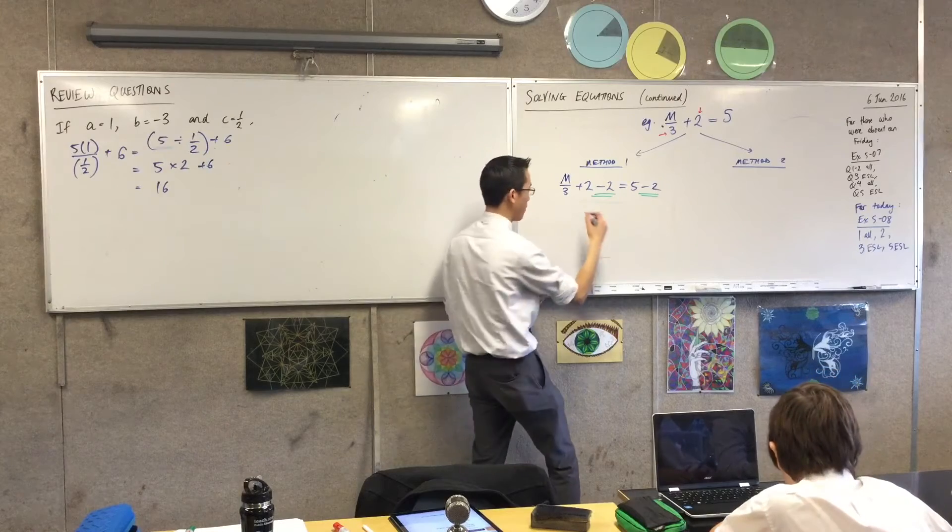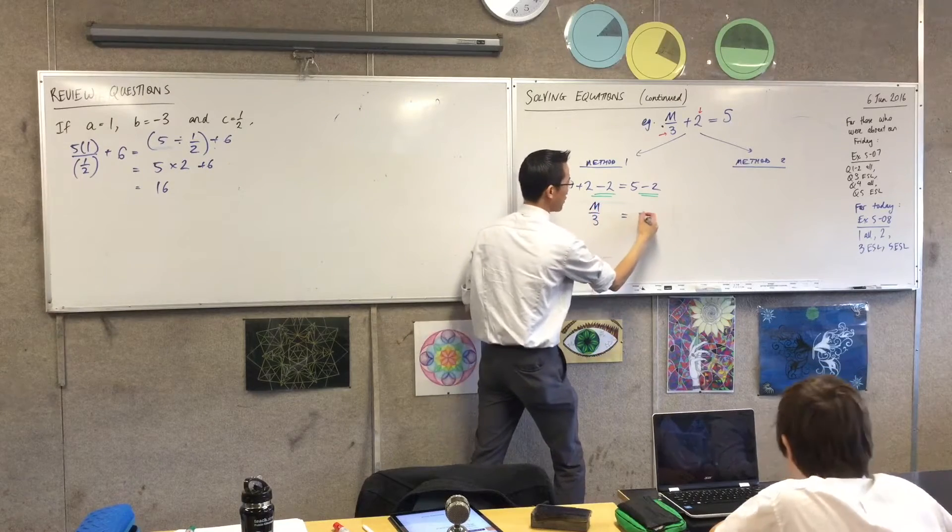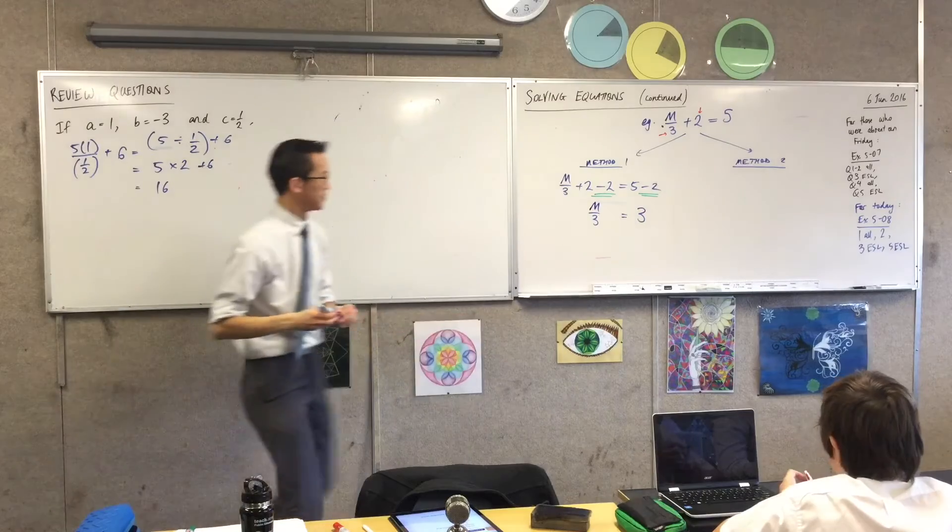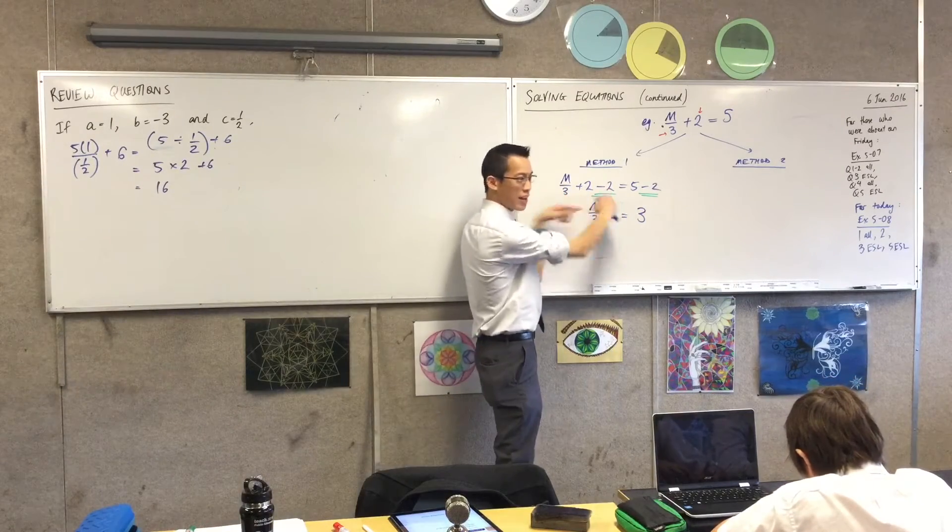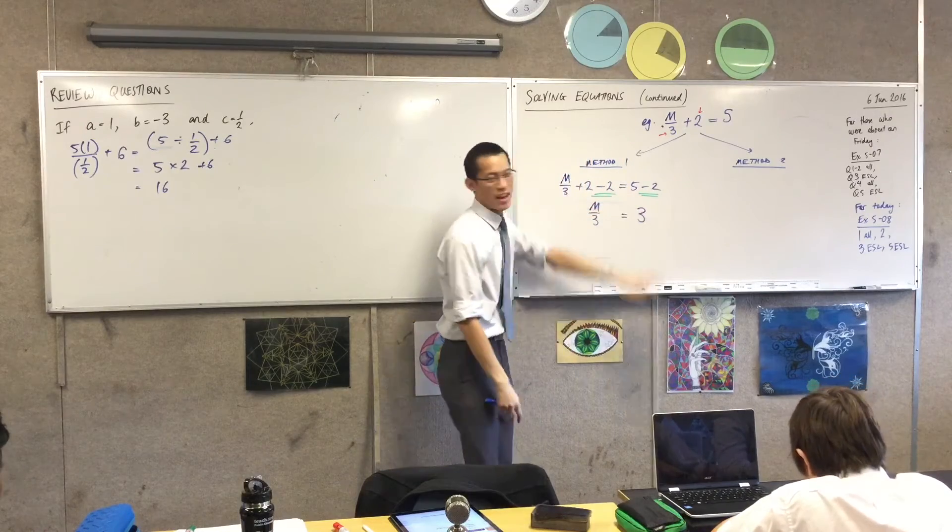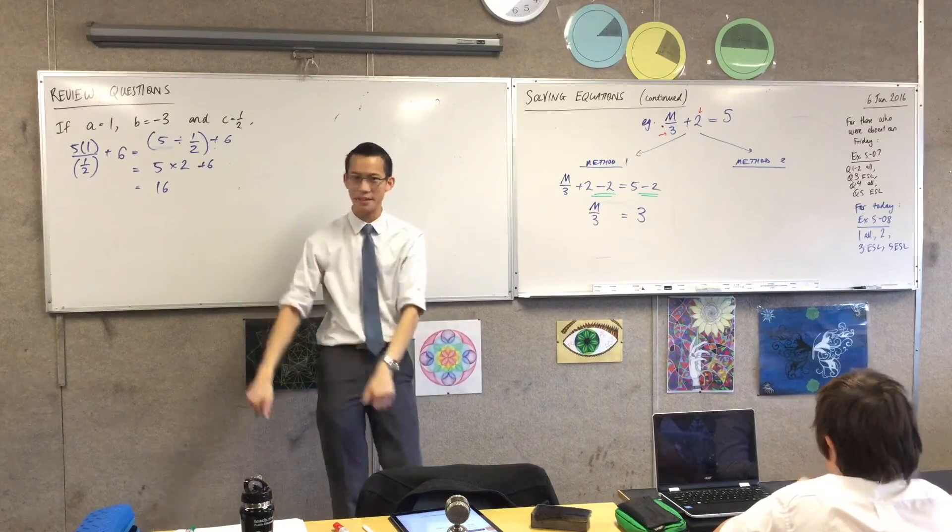What will that leave me with on the left-hand side once I've subtracted two? M divided by three equals three. Perfect. You've done both sides. Excellent. So you can see I've done the left-hand side. These two guys just kind of butt heads and cancel out. And on the right-hand side, five minus two, we all know how to do that.